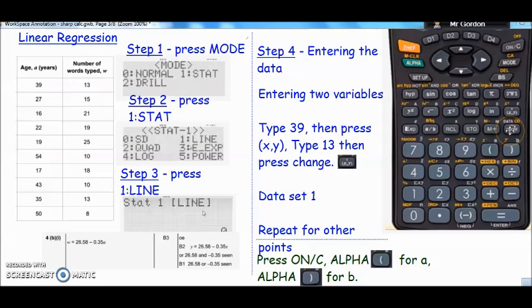It lives above the CHANGE button here, so you press that to get a comma and then you type in 13, so you should read 39 comma 13, then press CHANGE and that will enter that piece of data for you. Then you repeat the process, so 27 press X,Y to get your comma, then press 15, then press CHANGE and that will come up data set 2, so that's two pieces of data.